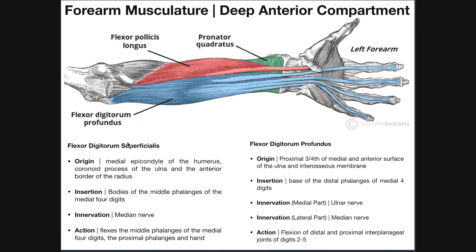If we peel off flexor digitorum superficialis — that was the intermediate layer — we're going to get to the actual deep compartment of the forearm. We have three muscles here, although some people would consider pronator quadratus a deeper layer since it's underneath the other two. These two muscles are flexor pollicis longus and flexor digitorum profundus. Let's talk about flexor digitorum profundus first.